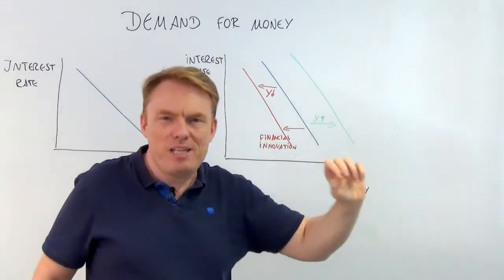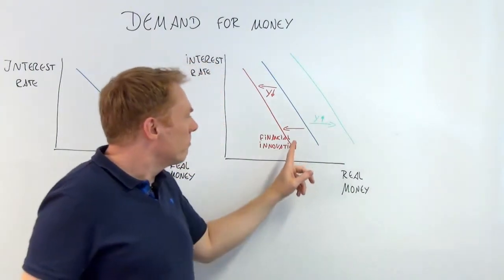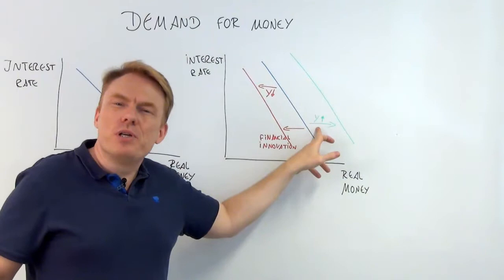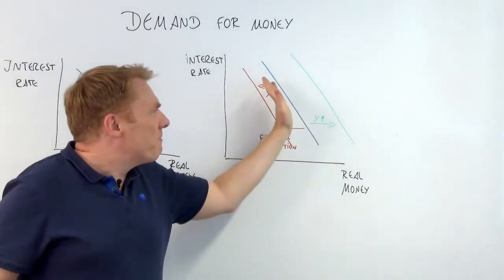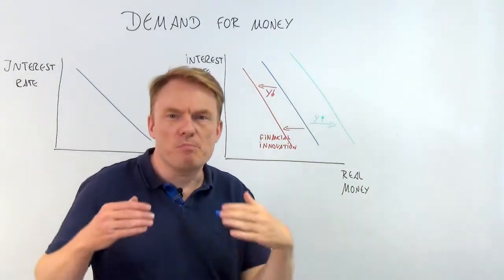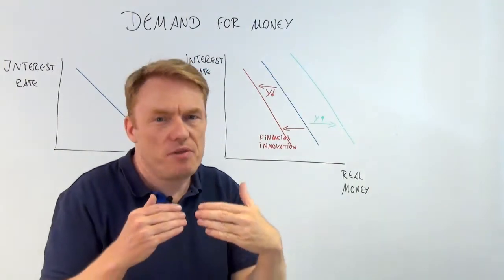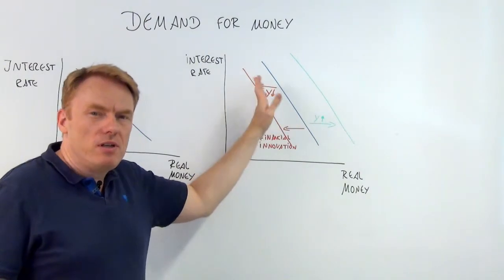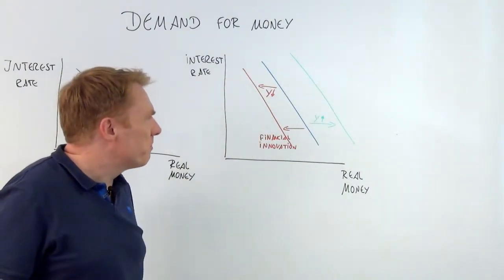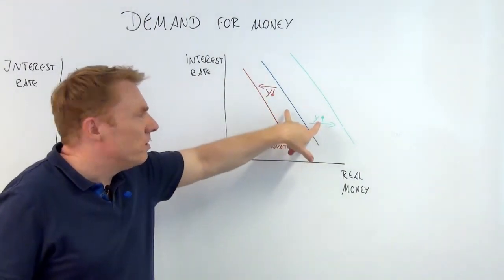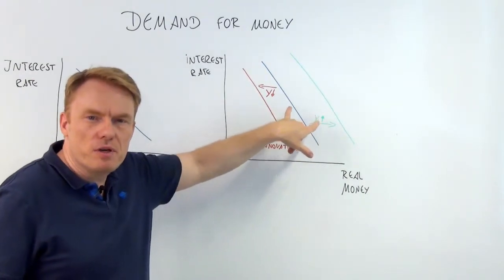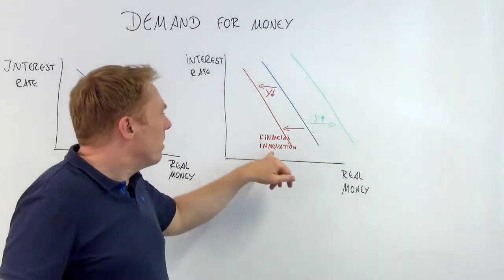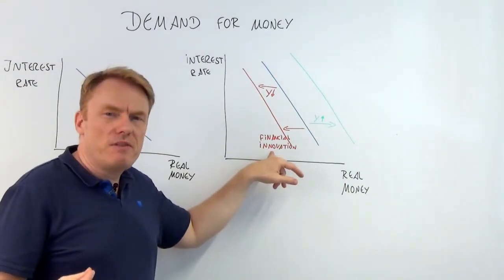Given the same interest rate, with a higher real GDP you want more money in your pocket. This means if real GDP rises, there is a movement to the right of the entire demand curve for money. If real GDP decreases, there is a movement to the left.